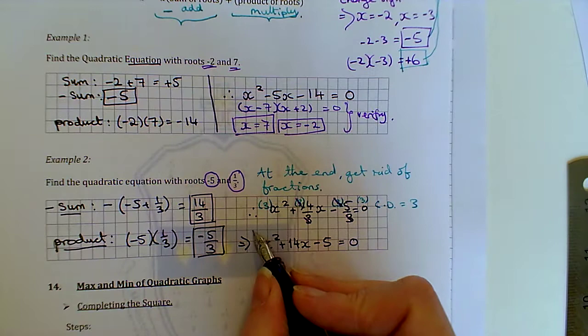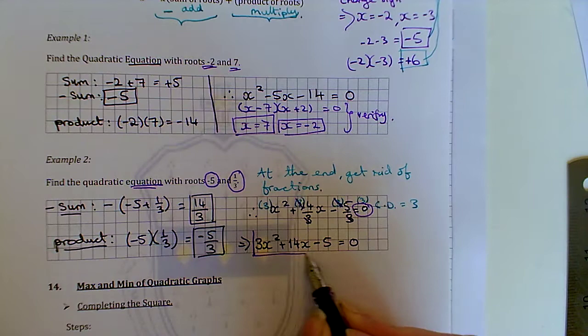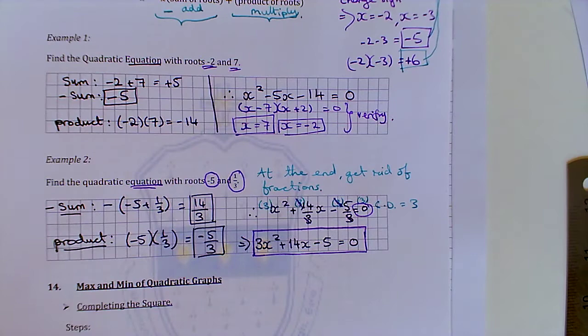And that is our quadratic equation. So we're asked for an equation. That's why I have the equal to 0. It's just a quadratic trinomial without the equal to 0 at the end. Okay.